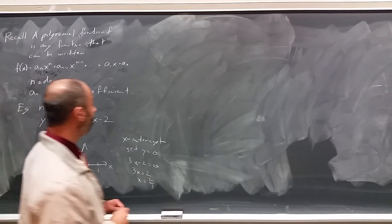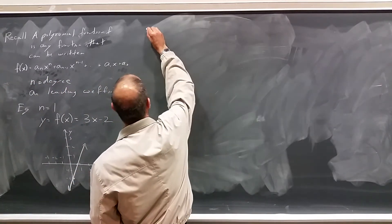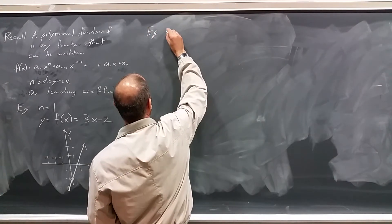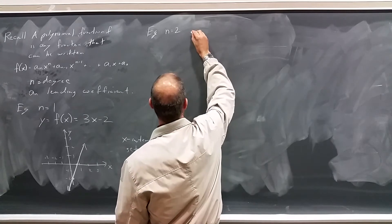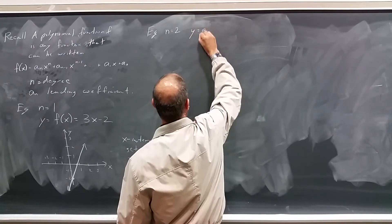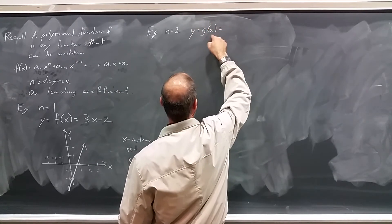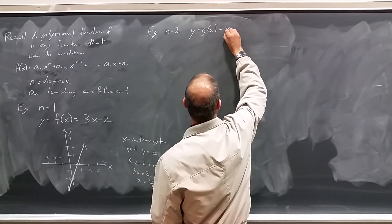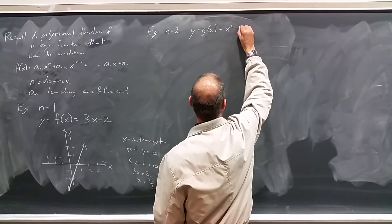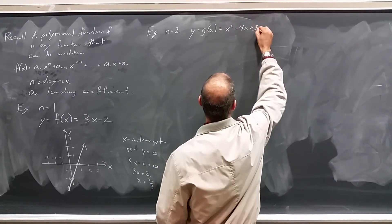Let's take a look at another example of a different degree. This time, we'll take a look at an example where the degree equals 2, and let's consider y equals g(x). We'll give it a different name this time. g(x) equals x² minus 4x plus 3.